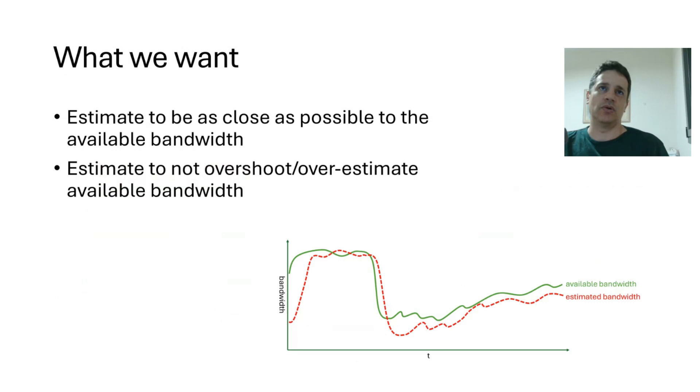So what is it that we exactly want? We want to estimate as close as possible to the available bandwidth, to the actual bandwidth that we have. And we need to do it dynamically across a session. We want to estimate in a way that doesn't overshoot or overestimate the available bandwidth, so that we use the network in a very efficient way, and without causing any issues to our media.